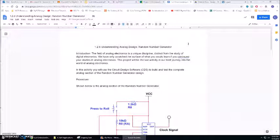All right DE students, we are back. So I'm going to walk you through 1.2.6 understanding the analog design random number generator. In your introduction it states that the field of analog electronics is unique. It's distinct from the study of digital electronics and that we've only gone over just the surface of analog electronics and this project will be the last activity in the world of analog electronics. So this is the very end of unit one.